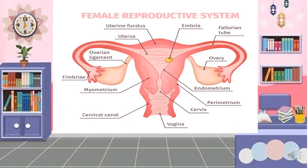This is the picture of the female reproductive system. The parts include: the uterine fundus, uterus, ovarian ligament, fimbria, myometrium, cervical canal, vagina, cervix, perimetrium, endometrium, ovary, fallopian tube, and the embryo.